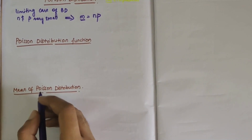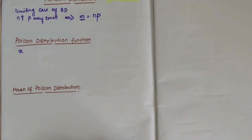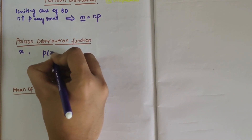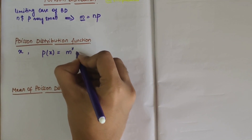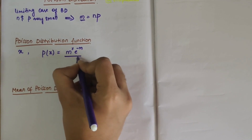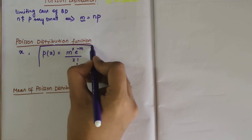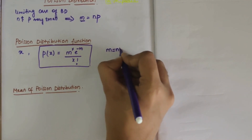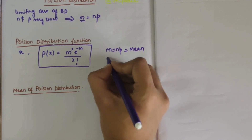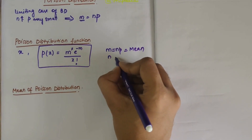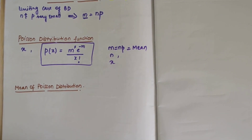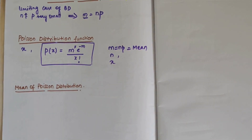Let x be the number of events in a fixed unit of time. Then the probability is: P(x) = m^x · e^(−m) / x!. Here m = np is the mean, n is the number of trials, and x is the required number of successes. P(x) is called the Poisson probability function and x is called the Poisson variate.